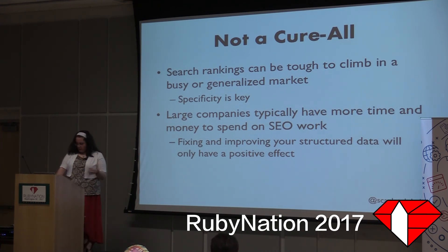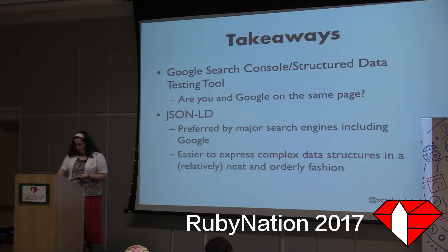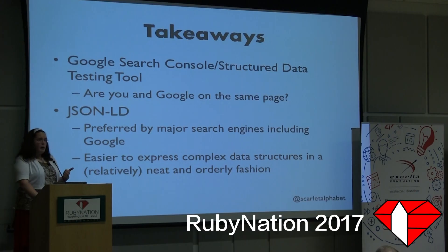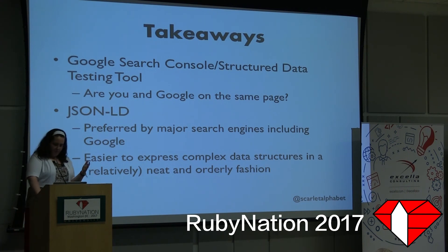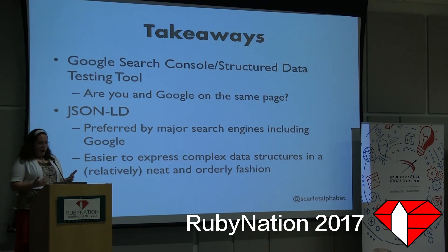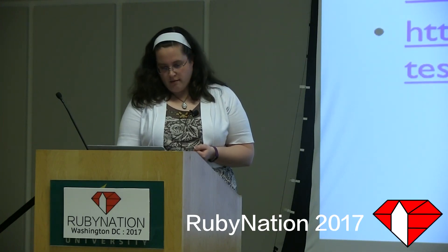In my case, removing what wasn't necessary, fixing the broken microdata, and then converting everything to JSON-LD resulted in a full page-and-a-half jump for some results based on the exact same search terms used. I can't promise that following the same process will have the same effect for you — it might be more, might be less. But now there are two more tools you can add to your toolkit to help investigate your search rankings. With the Google Search Console and the Structured Data Testing Tool, you can ensure that both you and Google are on the same page. Working towards Google's standards will help your rankings in other search engines as well. And even if you're happy with your page ranking and you're using microdata, converting to JSON-LD will neaten up your views and make more complex nested data structures easier to express. Future you will thank you.